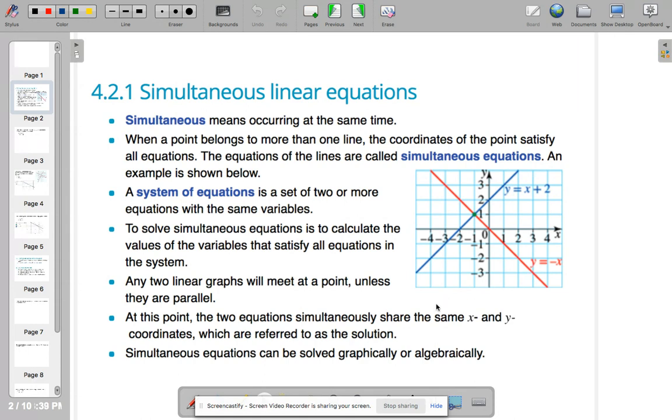Any two linear graphs will meet at a point unless they're parallel. So unless you've got two lines that are completely parallel, at some stage they will meet. There'll be a solution to the simultaneous equations. At this point where they meet, the two equations simultaneously share the same x and y coordinates. Refer to this as the solution.